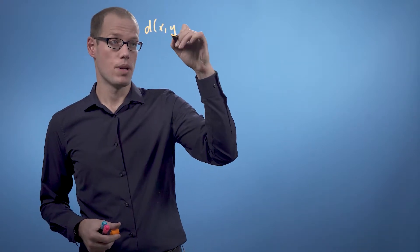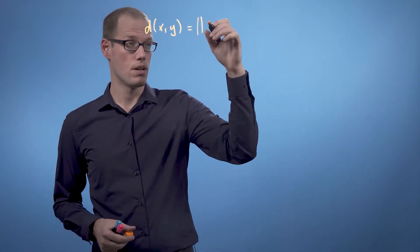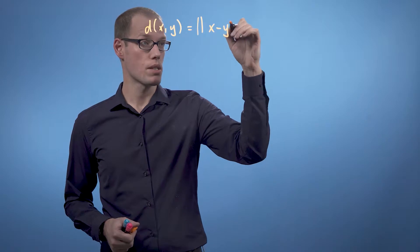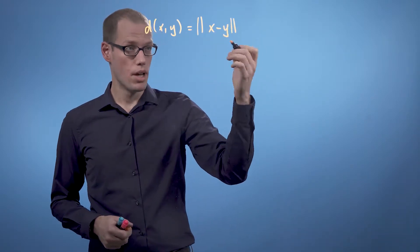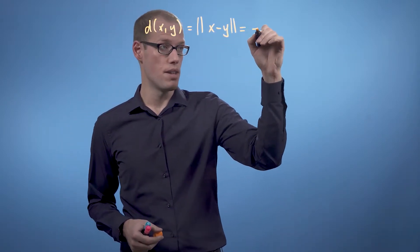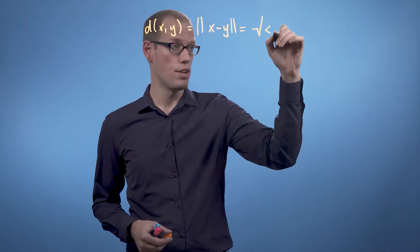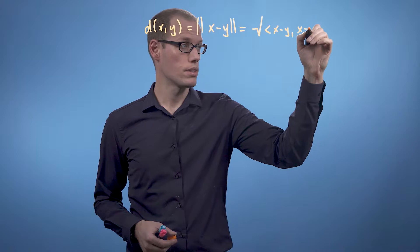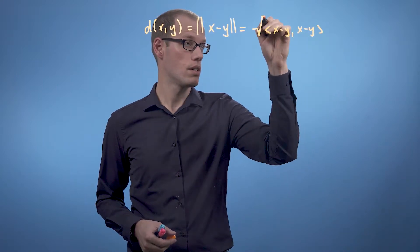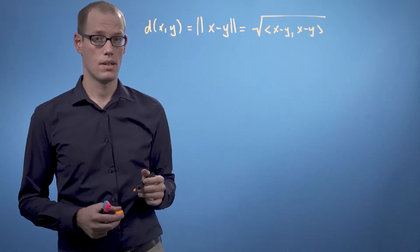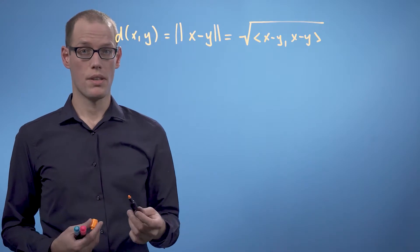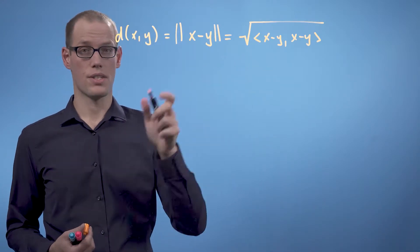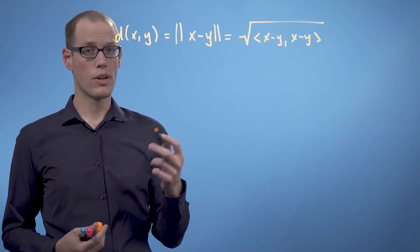We can write the distance between x and y as the norm of x minus y. As we know, this depends on the definition of our inner product. If we use a dot product, then the distance is called the Euclidean distance. Let's have a look at an example.